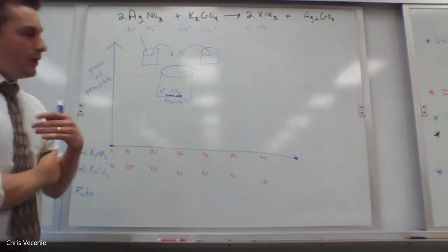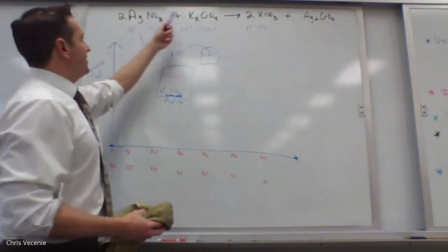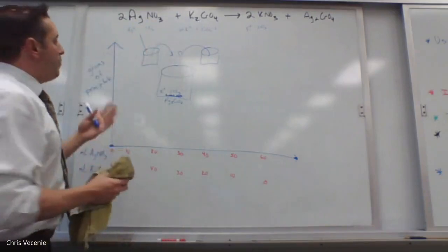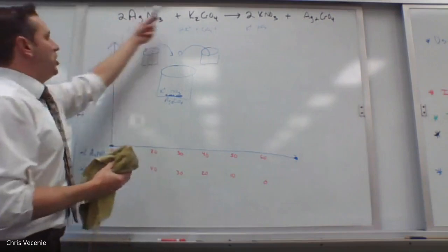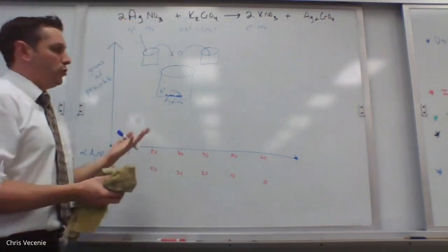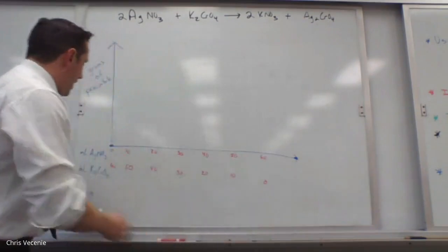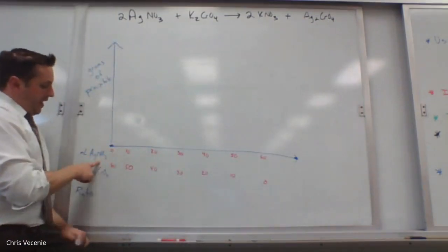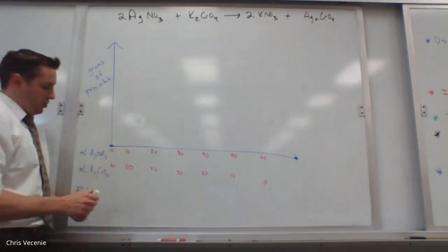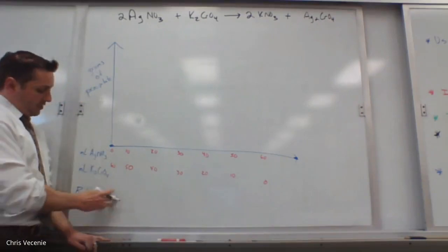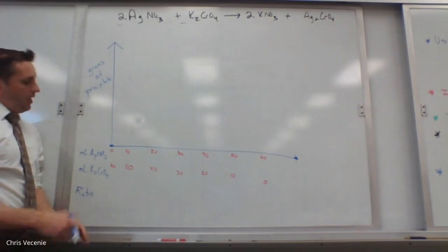When doing the continuous variations method, I'm going to take varying amounts of these two reactants, mix them together, and monitor how much precipitate we get. The more precipitate you get, the closer you are to the optimum — the real ratio — which we know from the equation is 2 to 1. You will set up a series of reactions where you vary the amount of AgNO₃ and K₂CrO₄, then record how much solid is generated. The ratio we write down is reflective of what those coefficients would be.